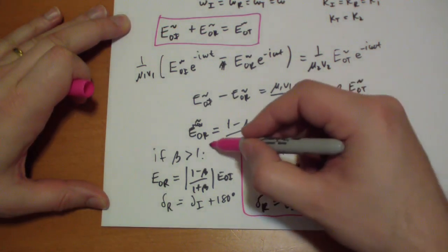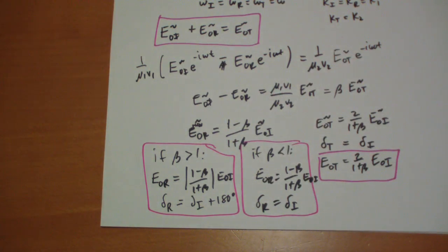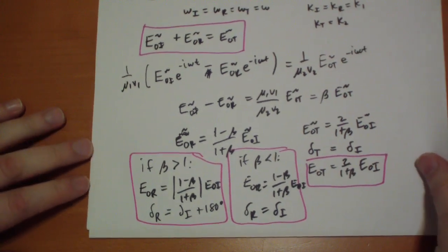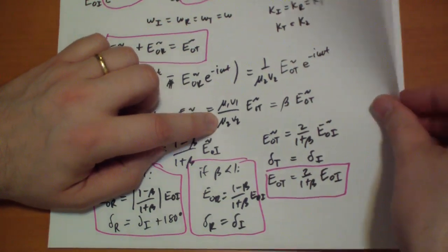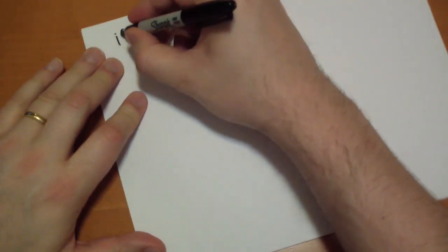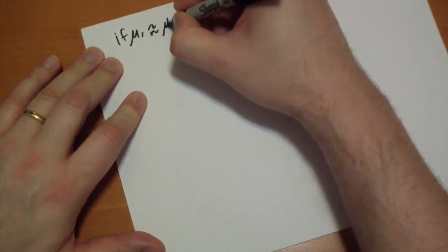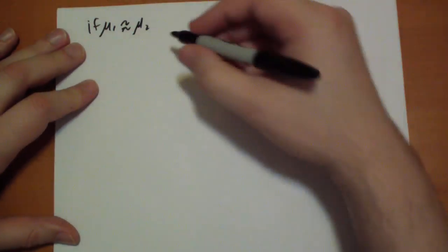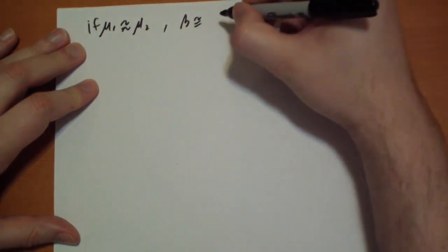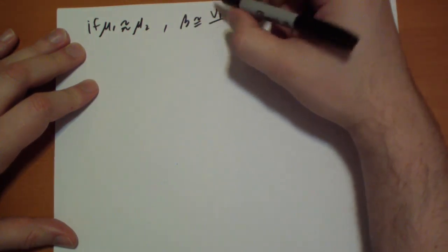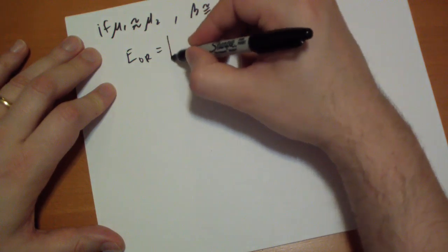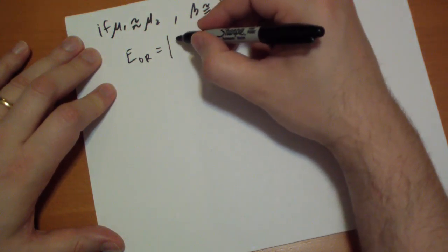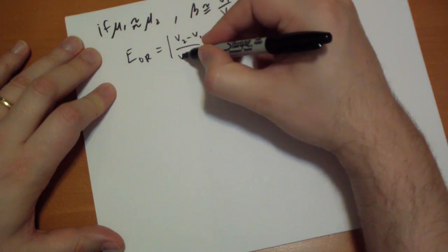And that is pretty much everything. Beta is a little bit messy to work with. And you might notice that for most materials, the mu's are pretty much equal. And so if we take the simplification that mu1 is about equal to mu2, which is true for most materials, then beta is about equal to v1 over v2. And we can rewrite the equations as E naught r equals v2 minus v1 over v2 plus v1 E naught i.